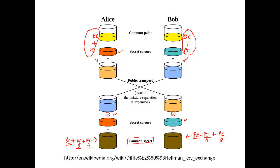Have you ever actually exposed your secret color while exchanging intermediate colors? The answer is no. You never disclosed your private color, and you never disclosed your ultimate common secret color either. That's why you successfully exchange your common secret color without actually exchanging the color itself. You can do the same thing in your encryption algorithm.